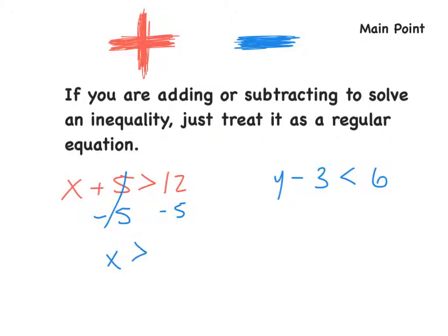Now off to the right, we have y minus 3 is less than 6. So what's the opposite of minus 3? Opposite of minus 3 is plus 3. So add 3 to both sides. So y is less than 9. Pretty simple. Just solve it as a regular equation.